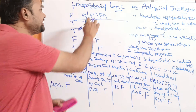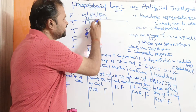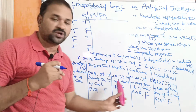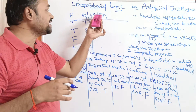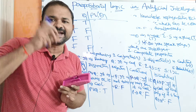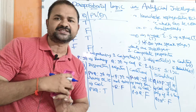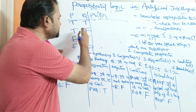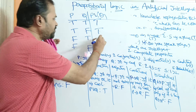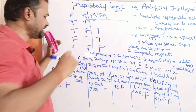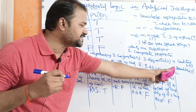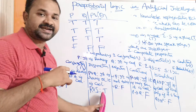Now let us see disjunction, which is denoted by the OR symbol (∨). For example, P ∨ Q means 'It is raining or it is cool.' If one of the propositions is true, then the disjunction returns true. Only when both propositions are false does it return false. So true ∨ true = true, true ∨ false = true, false ∨ true = true, and false ∨ false = false. For R ∨ S: R is true and S is false, so true OR false returns true.